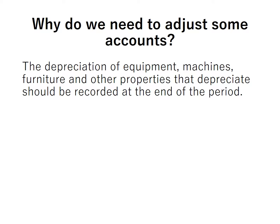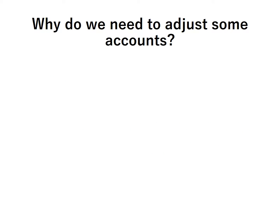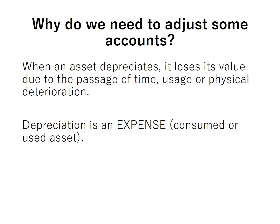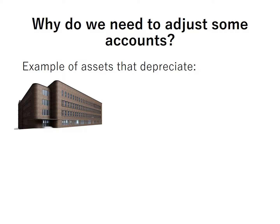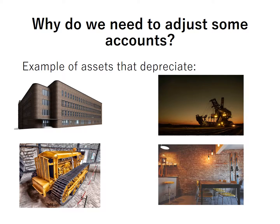Next reason: the depreciation of equipment, machines, furniture, and other properties that depreciate should be recorded at the end of the period. What is depreciation? Depreciation is a way to spread the cost of an asset that depreciates over its useful life. Generally, it is applicable to depreciable property and equipment. When an asset depreciates, it loses its value due to passage of time, usage, or physical deterioration. Depreciation is an expense because it's the consumed or used part of the asset. Examples of assets that depreciate: building, equipment, machines, and furniture and fixtures.